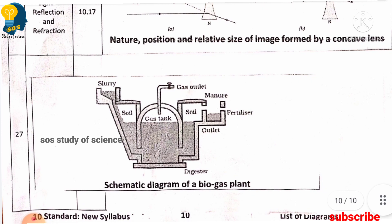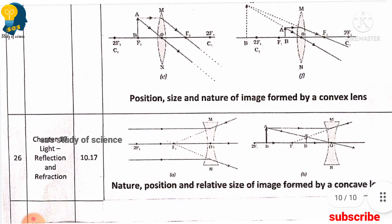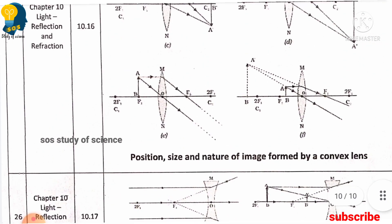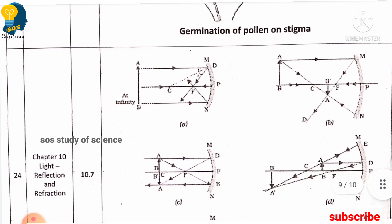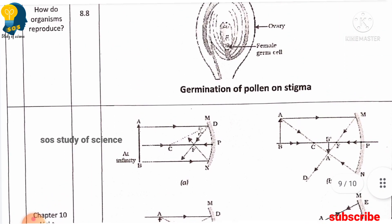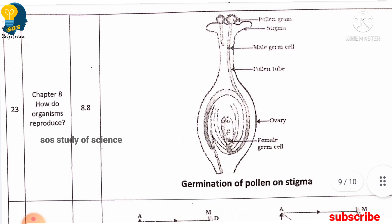The last diagram is the schematic diagram of a biogas plant. These are the list of diagrams you must learn for the SSLC 2022 board examination, so that you can easily score 12 marks. If you like this video, don't forget to share it with your friends and comment below. Do follow me on Instagram and Telegram. Thank you so much, see you in the next video.